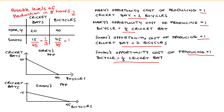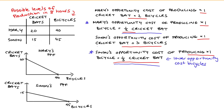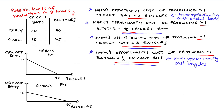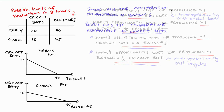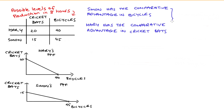What I hope you can see from our calculations is that Simon actually has a comparative advantage in the production of bicycles, because his opportunity cost of producing bicycles is lower than Mary's. Simon only gives up a third of a cricket bat when he makes one bicycle, but Mary gives up half. Mary has a comparative advantage in the production of cricket bats, because when she makes one cricket bat she only gives up two bicycles, but Simon gives up three. So Mary has that lower opportunity cost — that's her comparative advantage in cricket bats.